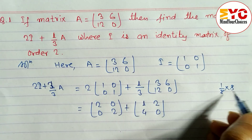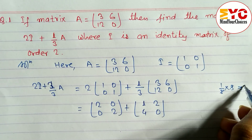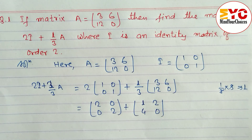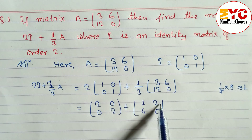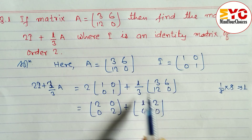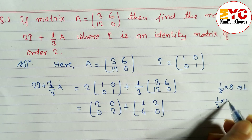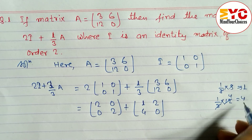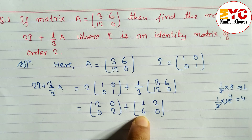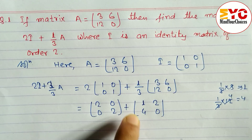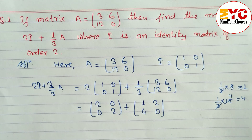To explain: (1/3)×3 = 1, since the 3s cancel. Similarly, (1/3)×6 = 2, (1/3)×12 = 4, and (1/3)×0 = 0. So we write the resulting matrix as [[1, 2], [4, 0]].